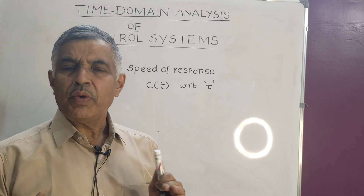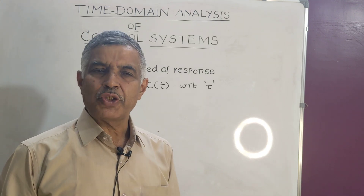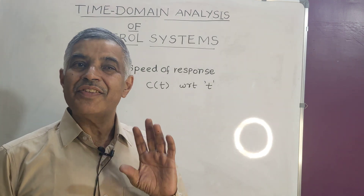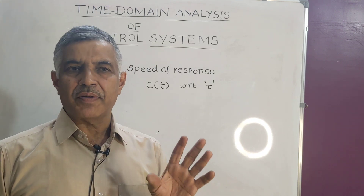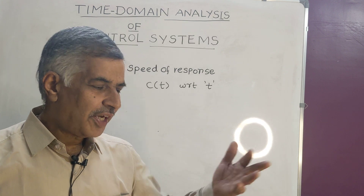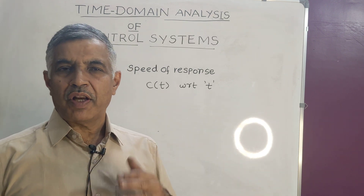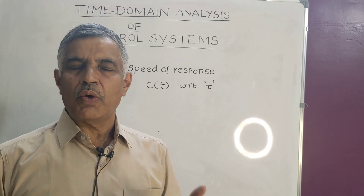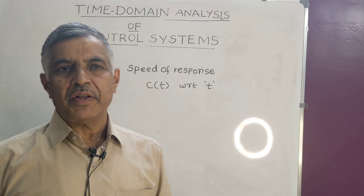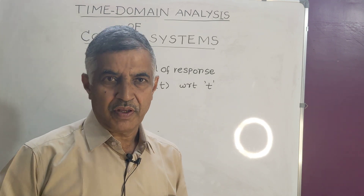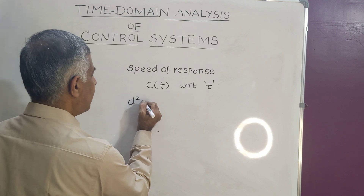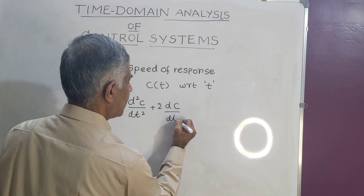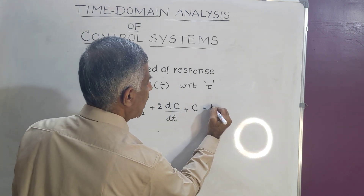To analyze speed of response, the student must start with modeling. As you know, the elementary process in control system analysis is to model the system mathematically. So you will write differential equations and arrive at linear differential equations. For example: d²c/dt² + 2·dc/dt + c = r(t).